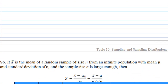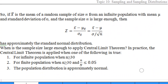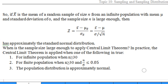Let's recall some notes from sampling and sampling distributions. If x-bar is the mean of a random sample of size n from an infinite population with mean mu and standard deviation sigma, and the sample size n is large enough, then z equal to x-bar minus mu over sigma over square root of n has approximately the standard normal distribution.